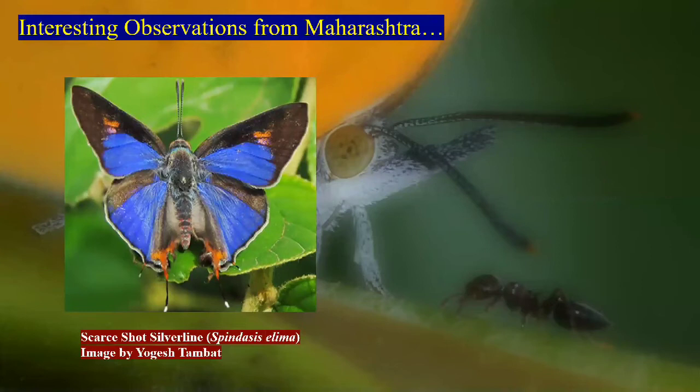Talking about silverlines in Maharashtra — we have all Western Ghats silverline species except the lilac silverline. We have plumbias, abnormal, star shot, common shot, common, and long-banded silverlines. We are still waiting for the lilac silverline to be reported from Maharashtra.